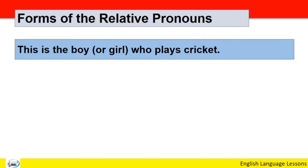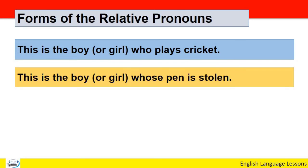مثال کے طور پہ: 'This is the boy who plays cricket' اور 'This is the girl who plays cricket' — boy اور girl دونوں کے لئے 'who' کا استعمال ہوتا ہے۔ 'This is the boy whose pen is stolen' اور 'This is the girl whose pen is stolen' — یہاں پہ بھی boys اور girls دونوں کے لئے 'whose' استعمال ہوتا ہے۔